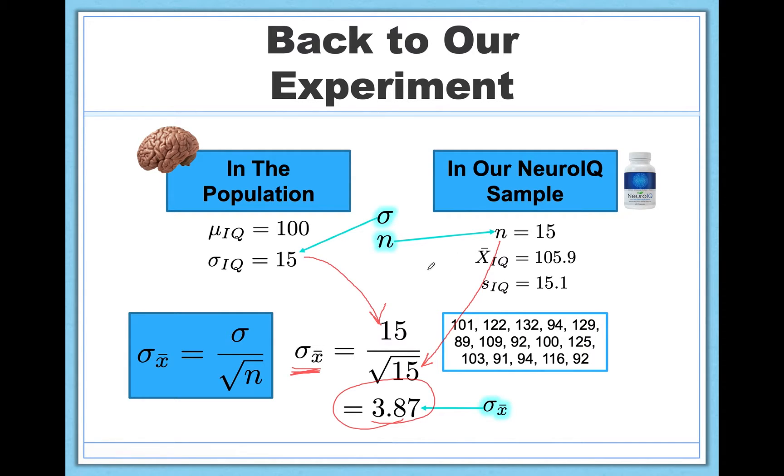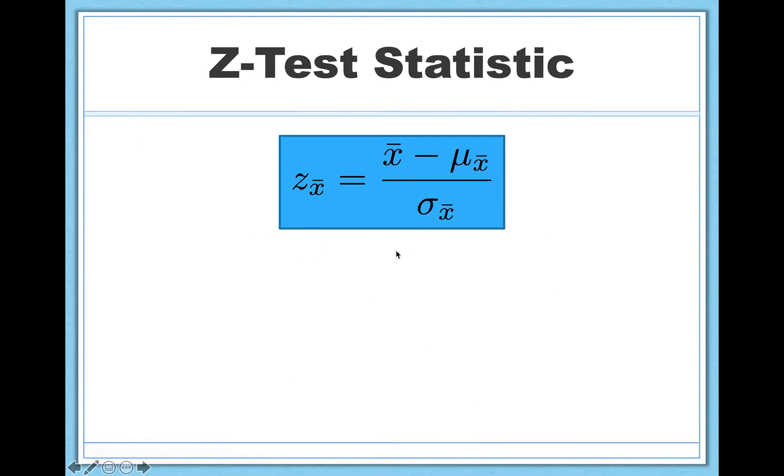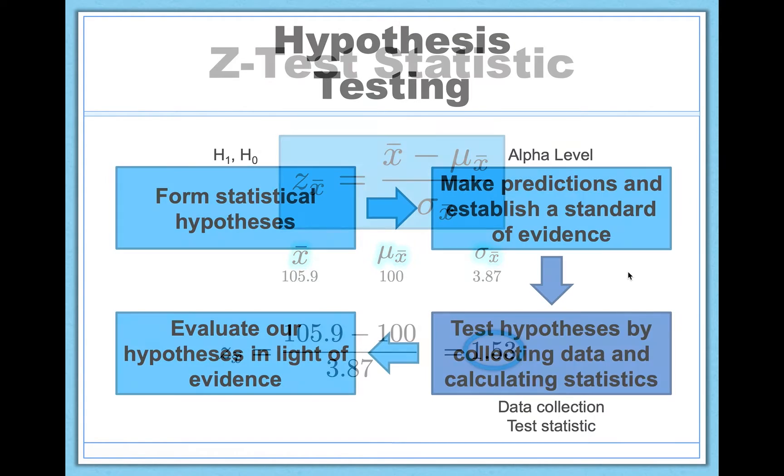And look, we have everything we need. Again, x-bar, it's going to go up here, 105.9, minus mu, it's going to be over here, 100, divided by the standard error, 3.87. Now, do not make the mistake of accidentally putting standard deviation in the denominator. If you do that, you're actually calculating what we call an effect size, something totally different that we're going to learn about soon. So just be sure, take your standard deviation, divide by the square root of n. That's what you put in the denominator of the test statistic. So let me show you the work for that. This is what we just talked about, 105.9 minus 100, divided by 3.87. And that's going to come out to 1.53. And that is your z-test statistic. And that's all there is to it.